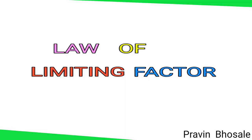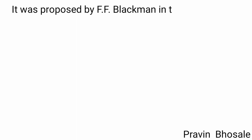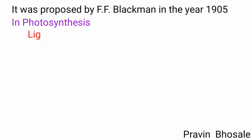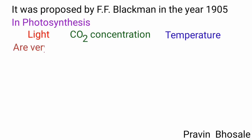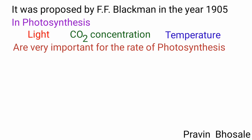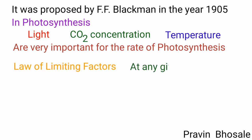Let's today revise the Law of Limiting Factor. It was proposed by F.F. Blackman in the year 1905. In photosynthesis, light, carbon dioxide concentration, and temperature are very important for the rate of photosynthesis. As per the Law of Limiting Factor, at a given time, the rate of photosynthesis depends on the factor which is the lowest.